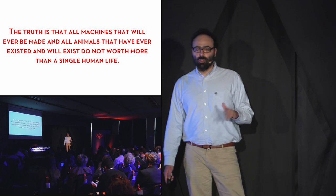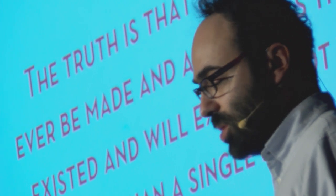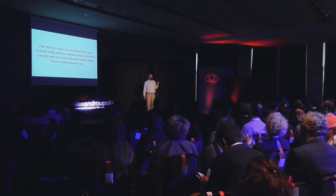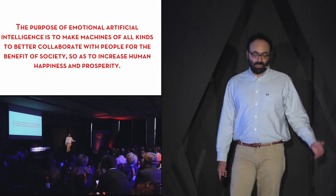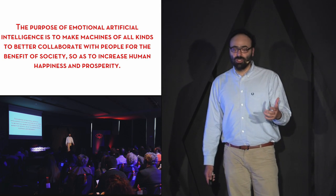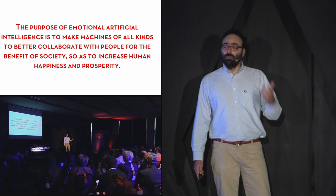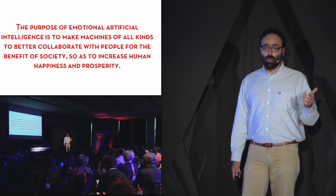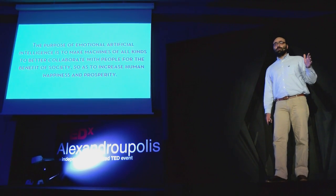I'm saying this right now because even the scientific community seems to forget that. The truth is that no matter how much cognitive awareness a machine shows when performing an emotional behavior, artificial intelligence actually produces machines that are very large, complicated calculators with no kind of awareness or sense of self. The purpose of artificial intelligence — the purpose of integrating emotions in artificial intelligence — is to make machines of all kinds better collaborate with people for the benefit of society, so as to increase human happiness. There is no such thing as robot happiness. And increase human prosperity. Thank you.